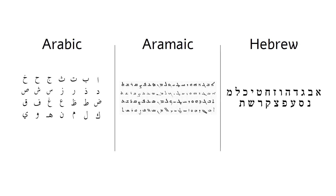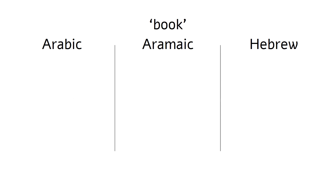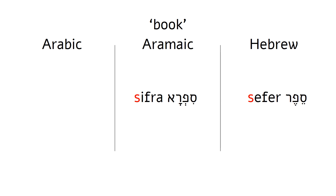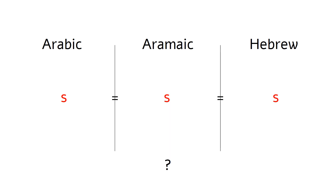Let's start with some simple examples. We'll start with the word for book. The word for book in Hebrew is Sefer. The same word in Aramaic is Sifra. You see that both of these languages have the same consonants in this word. In Arabic, this is actually an old word and quite obsolete today — it's Sifah. If we look only at the first consonant in these words, it seems that a Hebrew S is compatible with an Aramaic S and with an Arabic S, right?